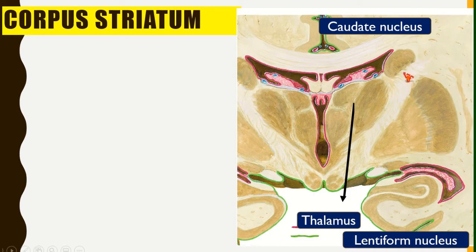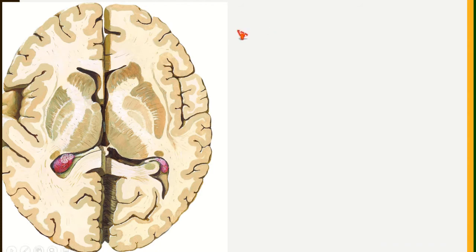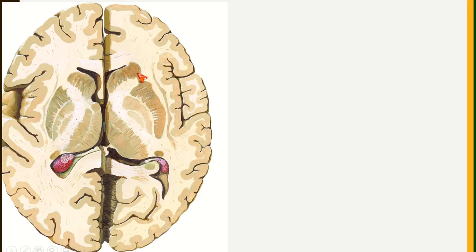The head of the caudate nucleus is shown here. You can identify the caudate nucleus and the lentiform nucleus. The head of the caudate nucleus and the lentiform nucleus are connected by a band of gray matter just below the anterior limb of the internal capsule. This entire matter presents a striated appearance — you can find the striations here — and that is the reason it is called corpus striatum.